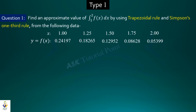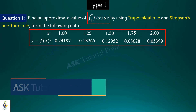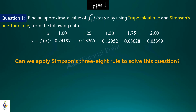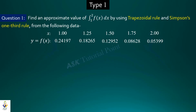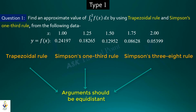I will start with the type 1 question. In type 1, I will tell you about equidistant arguments and corresponding entries and coordinates. I will tell you the approximate value of the function and the trapezoidal rule and Simpson's one-third rule. The common condition for the trapezoidal rule, Simpson's one-third rule, and Simpson's three-eighth rule is that the arguments should be equidistant.